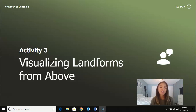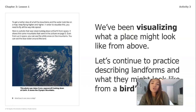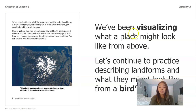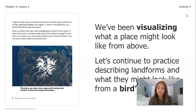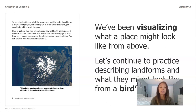We are on our last activity for lesson one today for chapter three, and we're going to be visualizing landforms from above. We've been visualizing what a place might look like from above, and we're going to continue to practice describing landforms and what they might look like from a bird's eye view. A bird's eye view is just another word for looking at it from higher up, kind of like in the picture we see over here to the left.